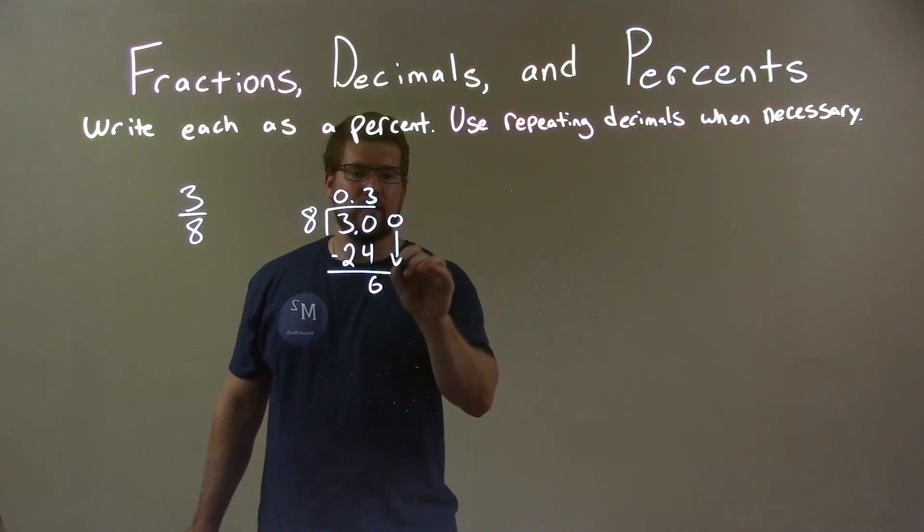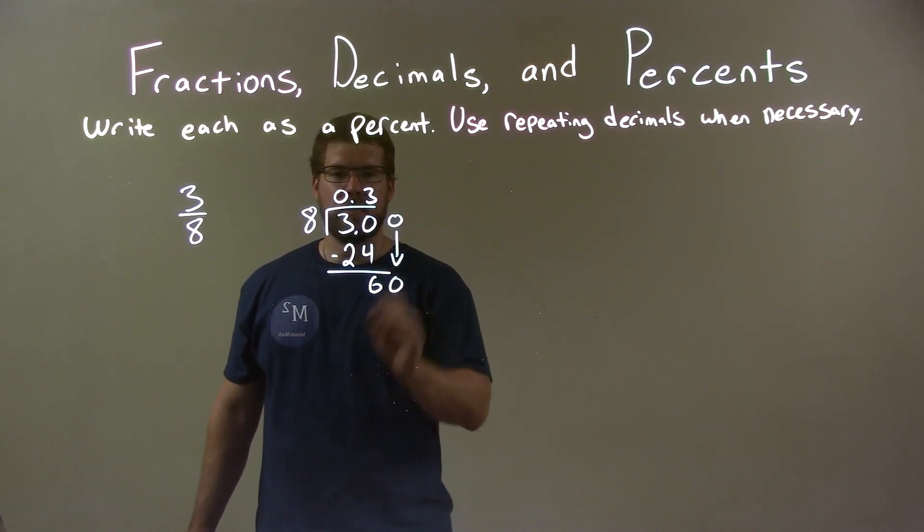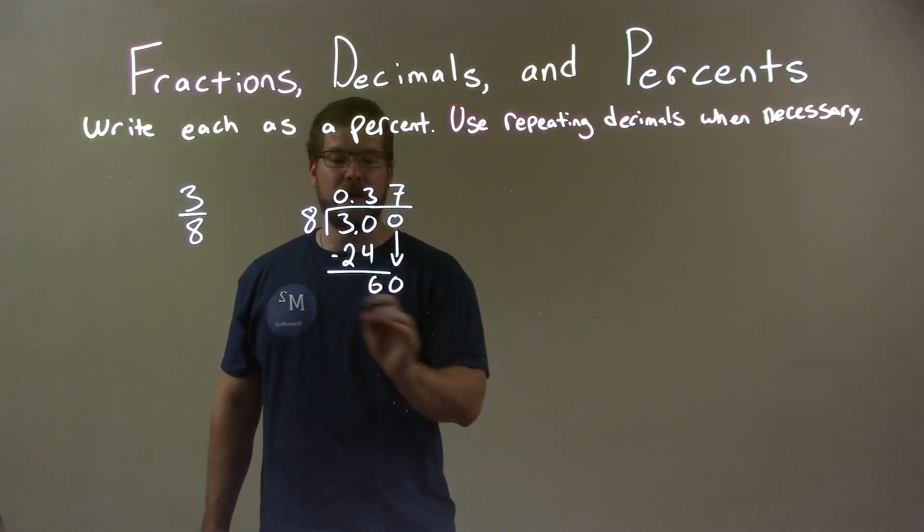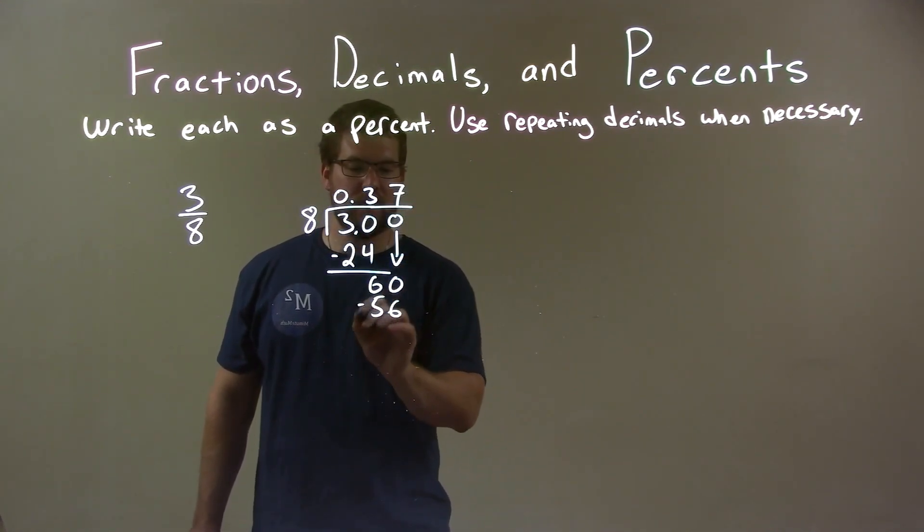Add another place value, bring it down, 60. What times eight gets me close to 60? Seven. Seven times eight is 56. We subtract them, 60 minus 56 is four.